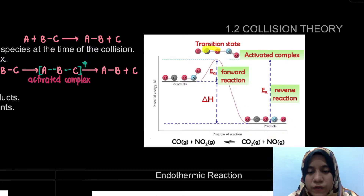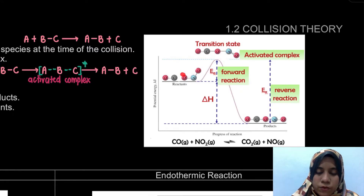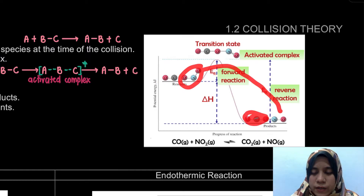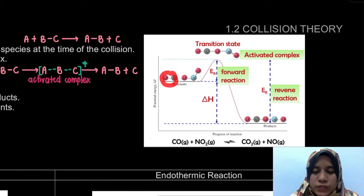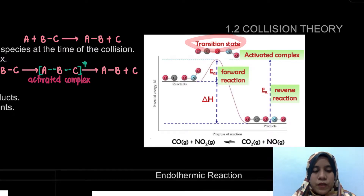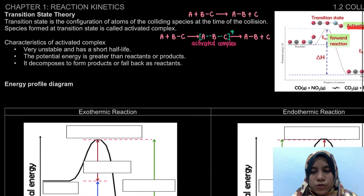We can see that there is an effective collision between carbon and oxygen. The oxygen from NO2 comes to the carbon, and the bond breaks — so CO becomes CO2, and NO2 becomes NO. The highest potential energy state is what we call the transition state, and the specific name for that species is the activated complex.